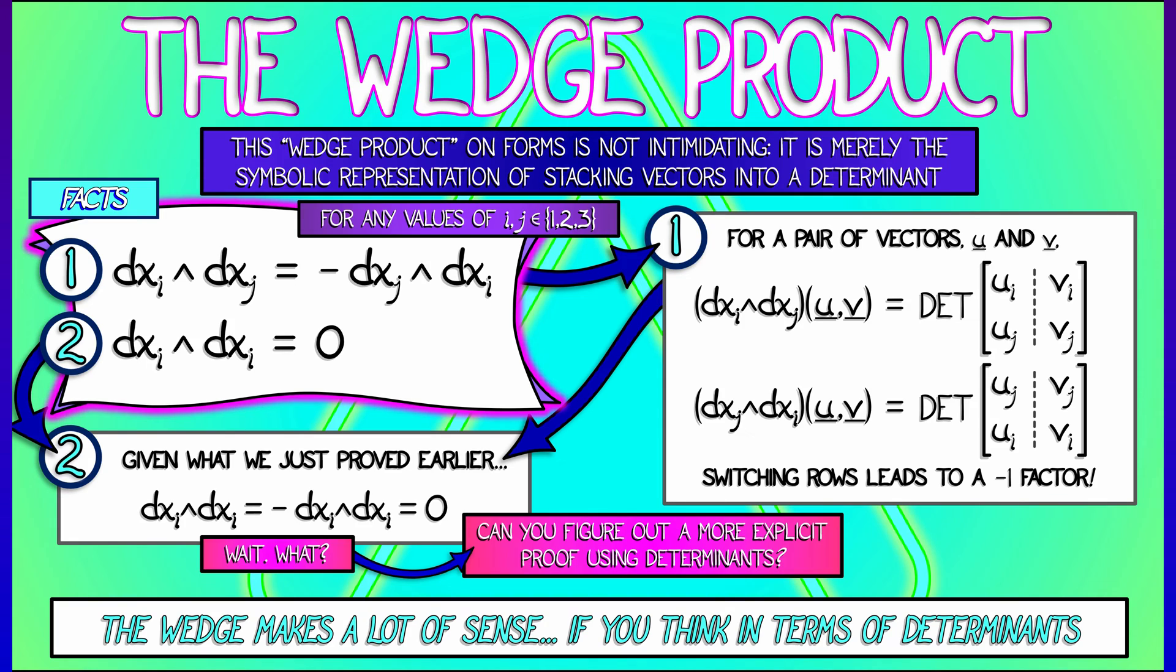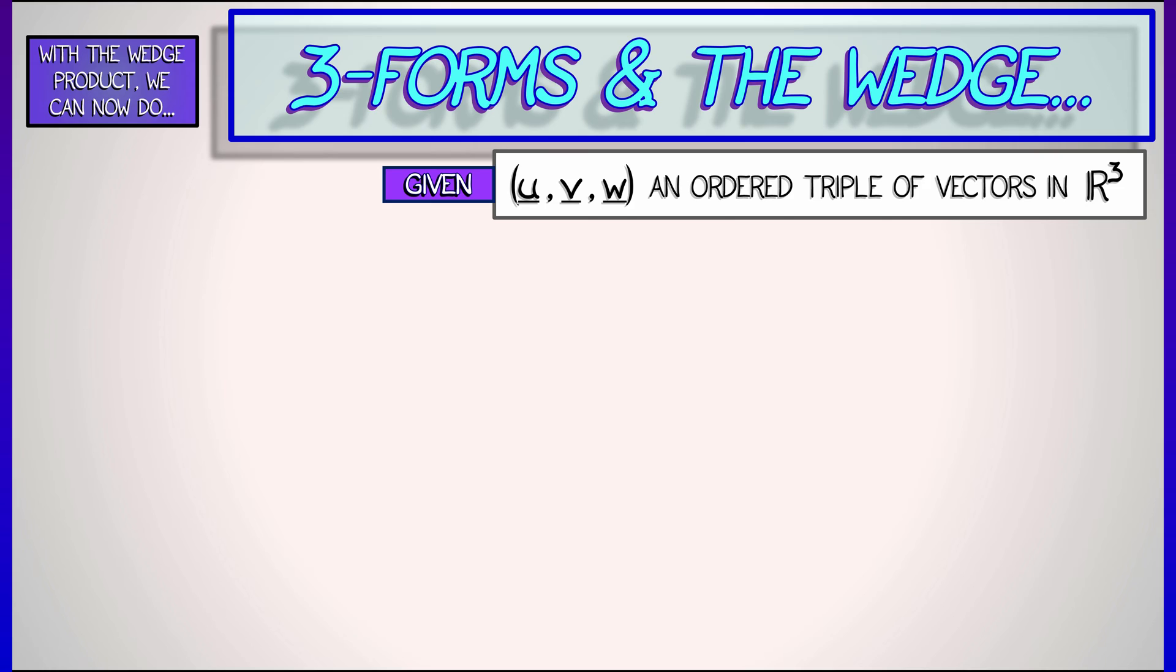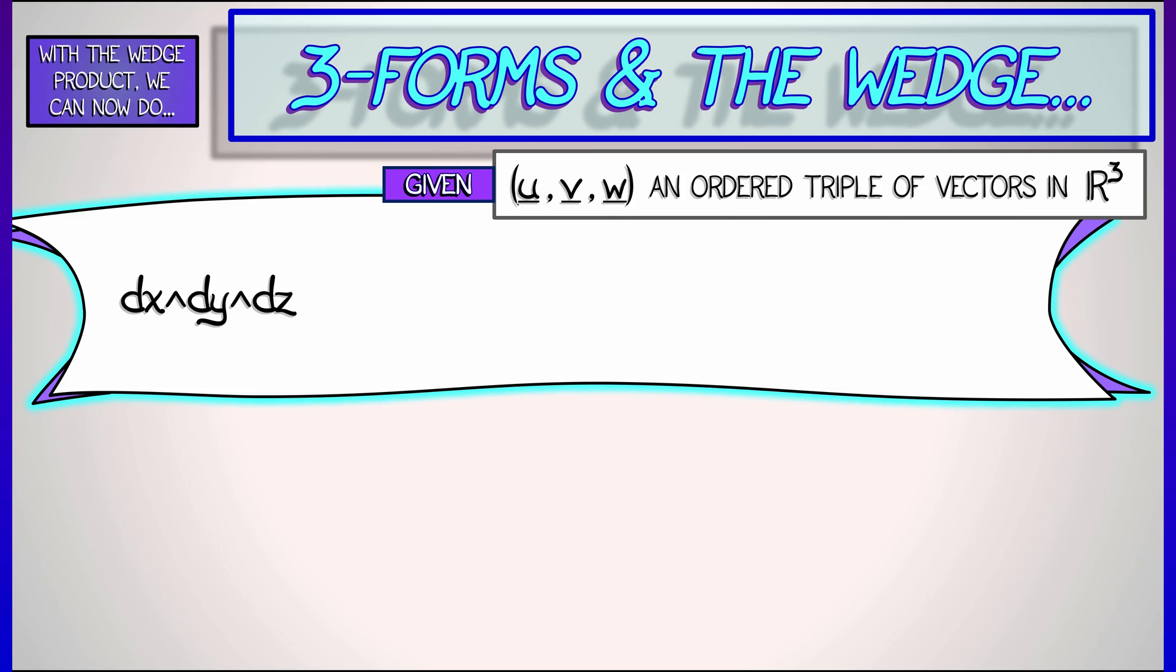But now that we've got that down, how do we make sense of three forms or four forms or other things? Let's go slowly. Let's say we have three vectors, u, v, and w in R3. A three form is going to eat those three vectors and return a scalar. Let's consider a basis three form, dx wedge dy wedge dz. This is in fact the basis three form as we shall see. What does it really mean? It has something to do with volume, oriented volume.